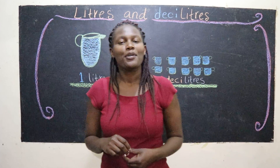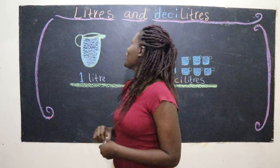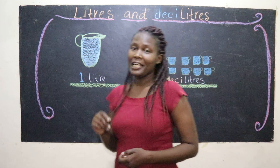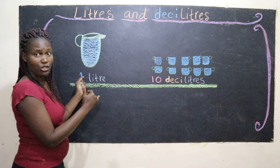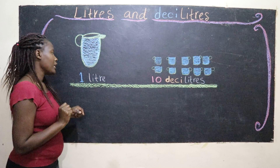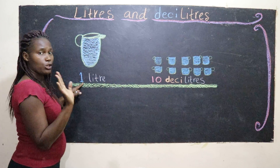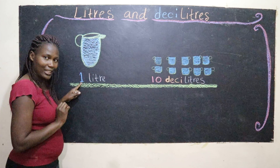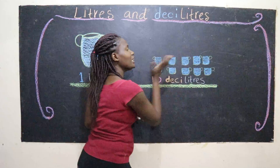Hello dear children, welcome to Learning Maths with Michelle. Today we're going to work with liters and deciliters. Over here we have this jug that I've drawn, and I'm assuming it is full of water — a jug that can hold one liter of water. Here I have 10 little cups.